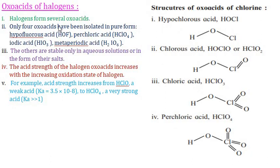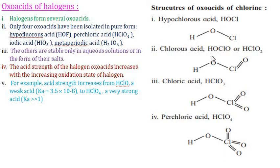Halogens form a number of oxoacids. There are four types of oxoacids formed by chlorine: hypochlorous acid, chlorous acid, chloric acid, and perchloric acid.